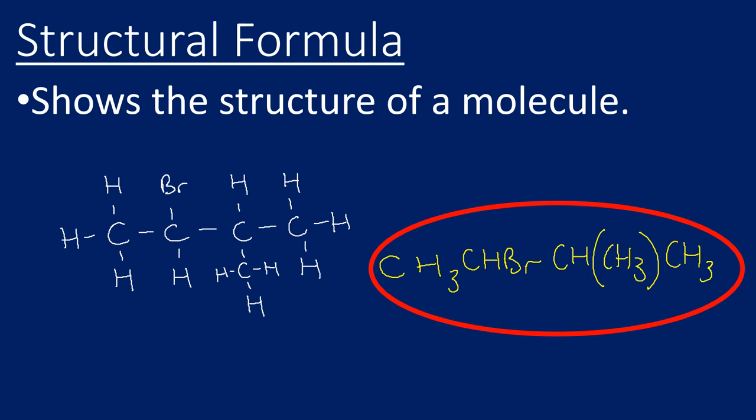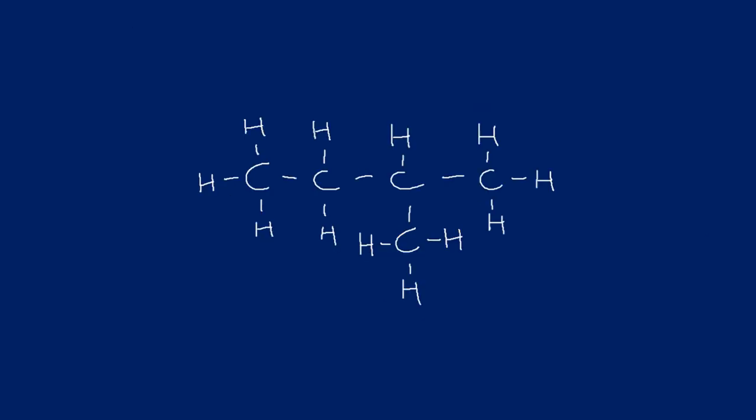Let's look at some examples now. Let's look at this displayed formula here and try to turn it into a structural formula. We know this is a displayed formula because it's showing all the atoms and all the bonds. I'm going to start with the left hand side. The first carbon is a CH3.